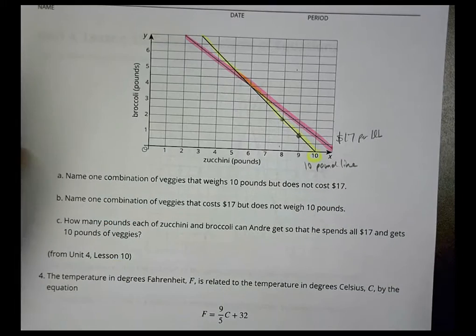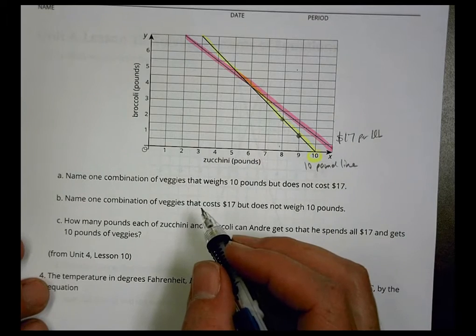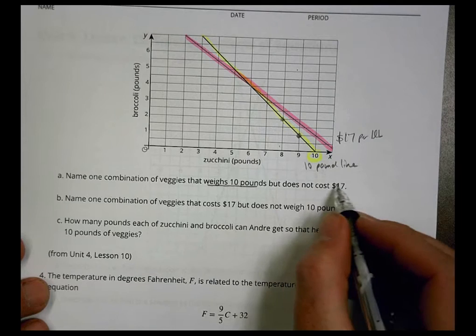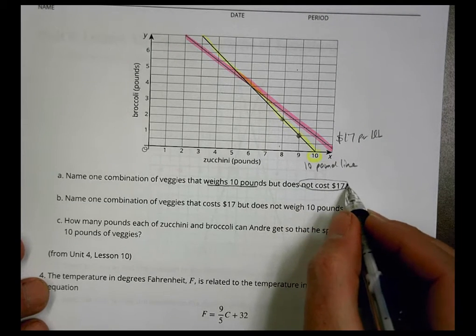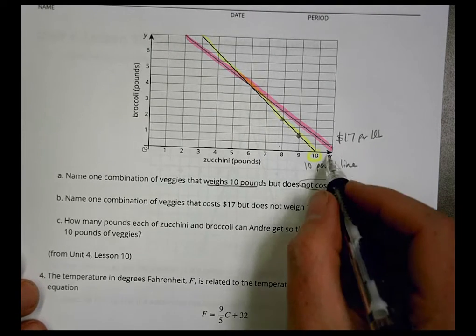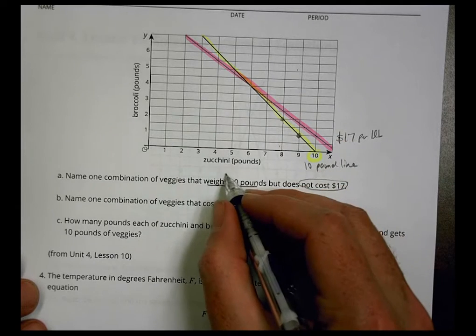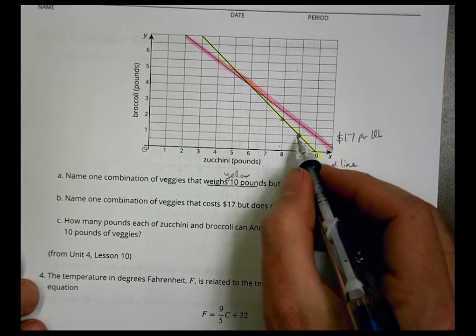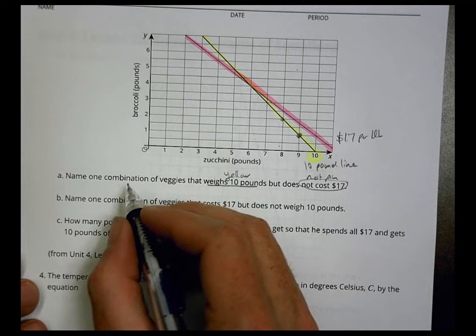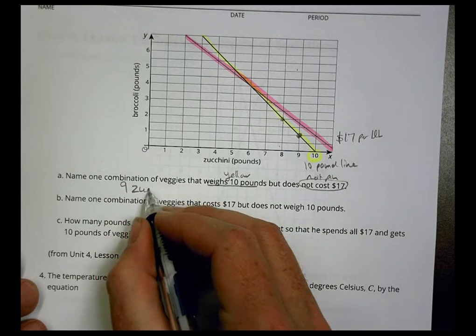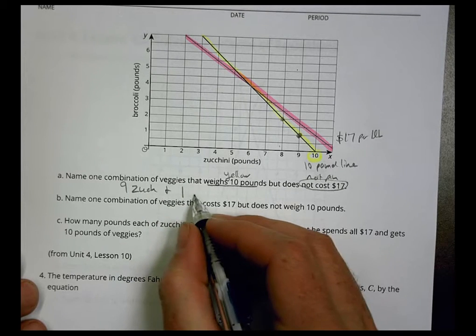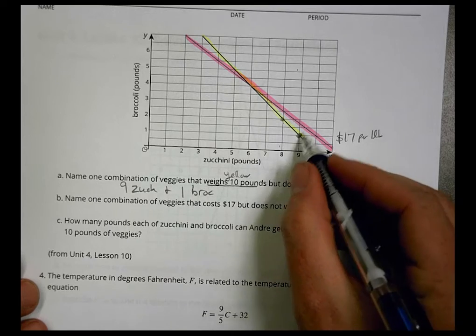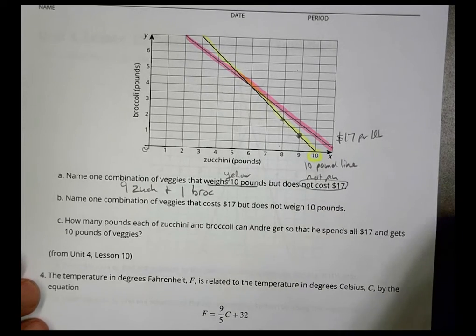The first question says name one combination of veggies that weighs 10 pounds but does not cost $17. So it's going to be on the yellow line, looking for one that's on the yellow but not the pink line. We could say we could have nine zucchini and one broccoli. That would be a combination where you have 10 vegetables but it doesn't cost $17.